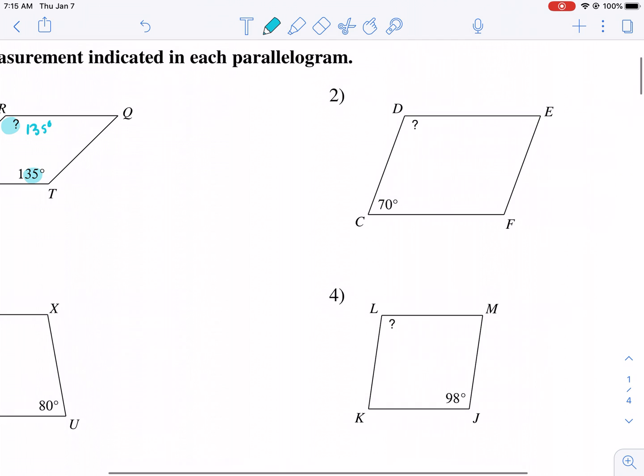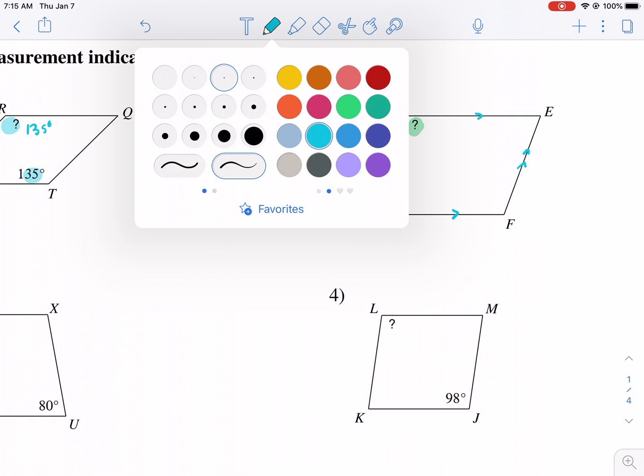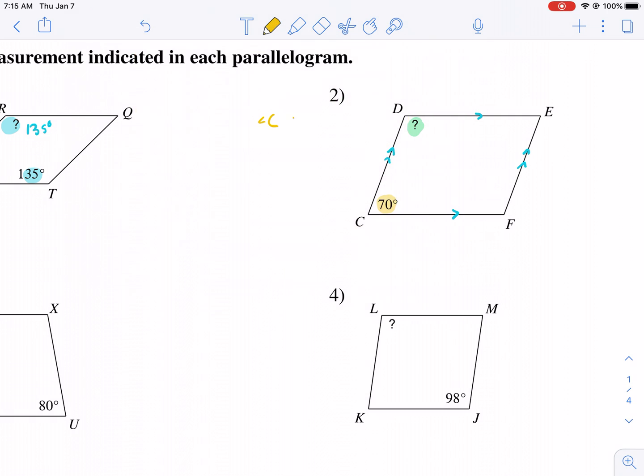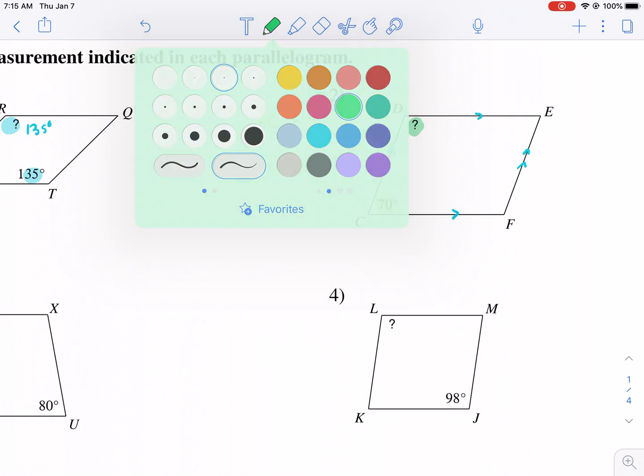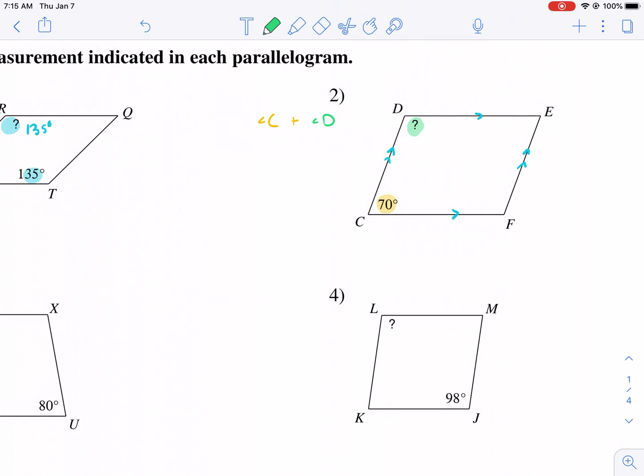C would be the same as E. But we know that because this is a parallelogram, parallelograms are shapes where the opposite sides are parallel to each other, thus the parallelogram. We know that these two angles here